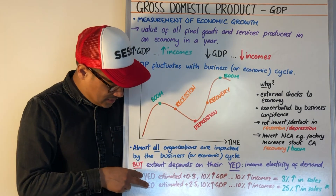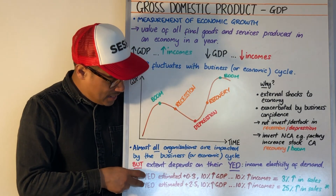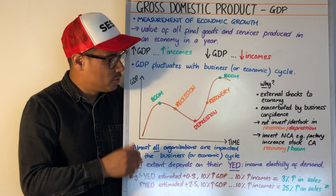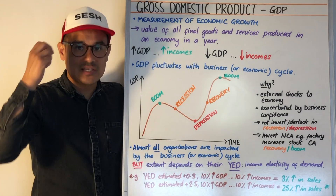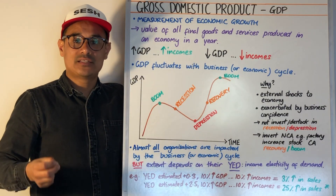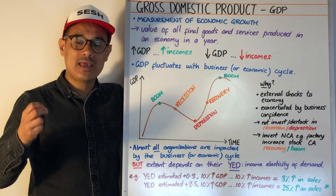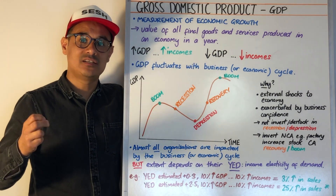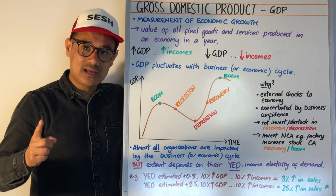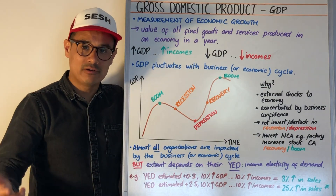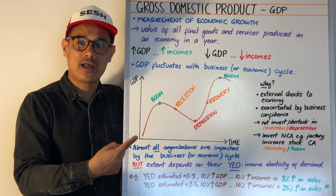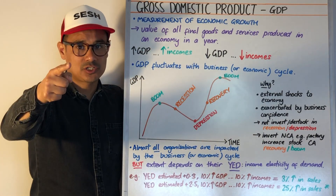Both businesses A and B have been affected by the business cycle and its movements, but the extent to which they've been affected depends upon their income elasticity of demand — their YED. For more details on how that impacts the functional areas, click that card up there, otherwise see you at the next session.